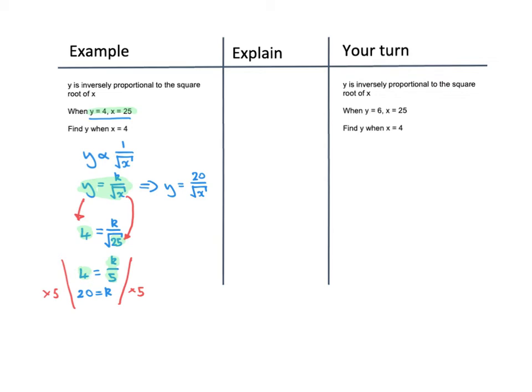We solve this for K by doing the inverse of divide by 5. We multiply both sides by 5 and that gives us K equal to 20. We can then go back up here and rewrite this formula not as Y equals K over the square root of X, but Y equals 20 over the square root of X, because we now know that in this case K is 20.